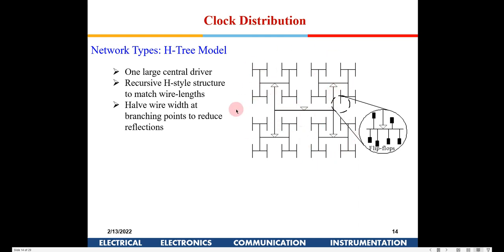If you see here, the wire lengths generally decrease as we move from the top edge to the bottom edge, so that at high frequencies there are no reflections. That is one of the concepts used here. This is known as a recurrent edge tree model.